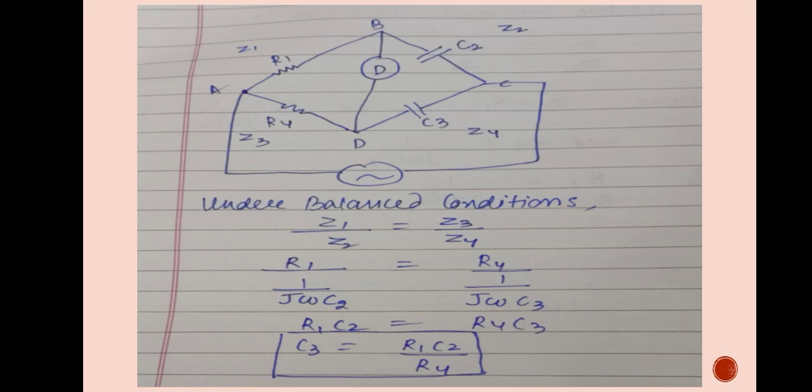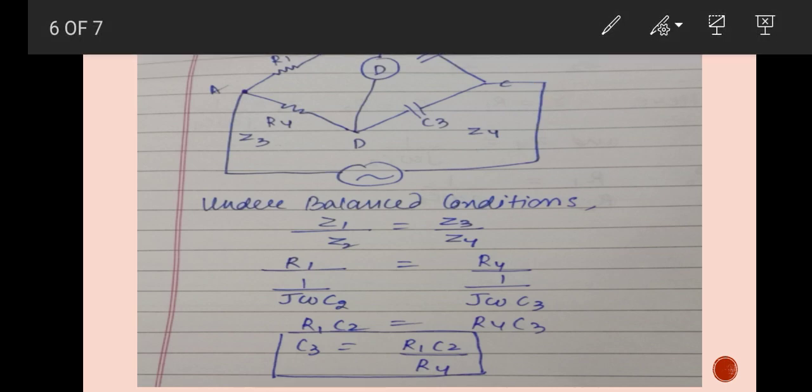Now, when our balance condition comes, what will happen in our balance condition? What will happen in our detector? The detector will not be closed. No sound will come. And at this condition, our bridge will be in balanced condition. And in balance condition, our Z1 by Z2 will be equal to Z3 by Z4. If we can see here, we have only Z1, our R1 will be equal to R1. Our Z1 will be equal to R1.